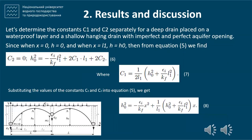In the first equation, we determine the constants C1 and C2 separately for a deep drain placed on a waterproof layer and a shallow drain with imperfect and perfect aquifer opening. Since when x equals zero, h equals zero, and when x equals L1, h equals h₀, then from equation 5 we find equation 6. Substituting the values of constants C1 and C2 from equations 6 and 7 into equation 5, we obtain equation 8.